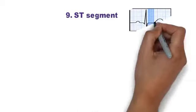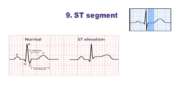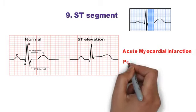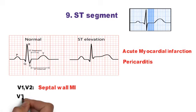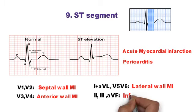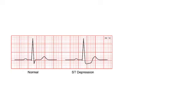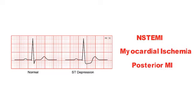Step 9 is ST segment — the flat isoelectric section between the end of the S-wave (J-point) and the beginning of the T-wave. ST elevation can be due to acute MI or pericarditis. ST elevation in V1–V2 indicates septal wall MI; in V3–V4, anterior wall MI; in lead 1, aVL, V5–V6, lateral wall MI; and in leads 2, 3, aVF, inferior wall MI. ST depression is seen in NSTEMI, myocardial ischemia, posterior MI, and other causes.